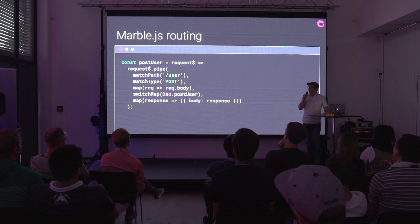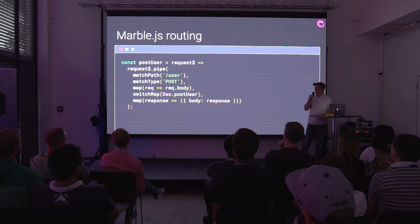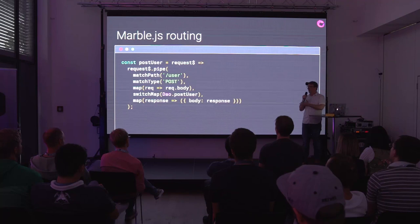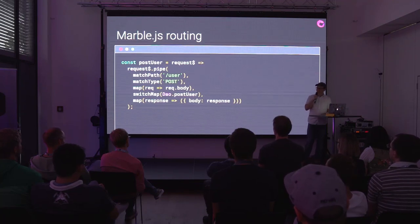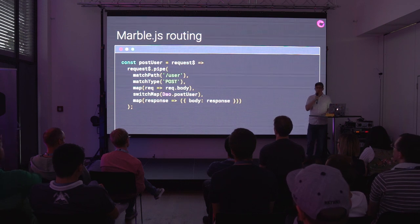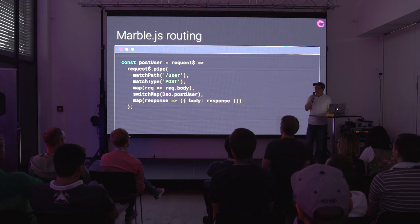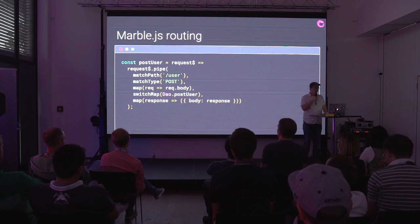It also comes with custom operators. There's a matchPath and matchType operator from Marble.js. This is saying: if the path matches /user and it's an HTTP GET or POST, we're going to take the body out of the request, pass it to some data access object, get the response out of it, and send that in our actual response — presumably posting some user data to your database.